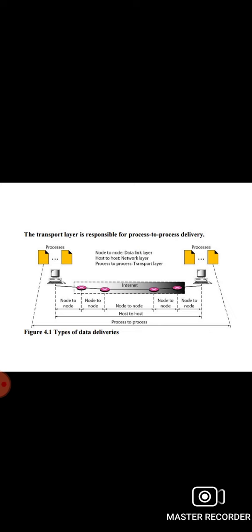For example, to get the day and time from a remote machine, we need a daytime client process running on the local host and a daytime server process running on the remote machine. Operating systems today support both multi-user and multi-programming environments. A remote computer can run several server programs at the same time, just as local computers can run one or more client programs at the same time. For communication, we must define local host, local process, remote host, and remote process.